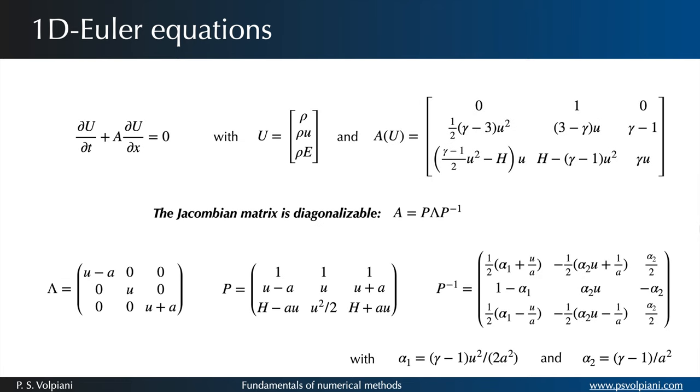The new system of equations is strictly hyperbolic. That means that the matrix A has three real and distinct eigenvalues, lambda 1, 2 and 3, and is diagonalizable. That means that it can be decomposed as P times lambda times P minus 1. These three matrices take the following form.